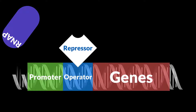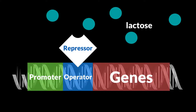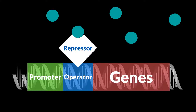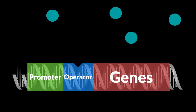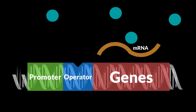So how do we get the repressor to be removed from the operator? Whenever E. coli comes across any sort of lactose — a complex sugar, represented here with little blue circles — these lactose molecules, or more exactly an isomer of lactose, have a tendency to bind to the repressor. The repressor protein has a certain shape that allows it to bind to the operator. But when this isomer of lactose binds to the repressor, the repressor will change its shape and can no longer fit in the operator. So the operator is now free, which means RNA polymerase can now bind to the promoter region and transcribe the genes into mRNA, which can be translated into lactase.